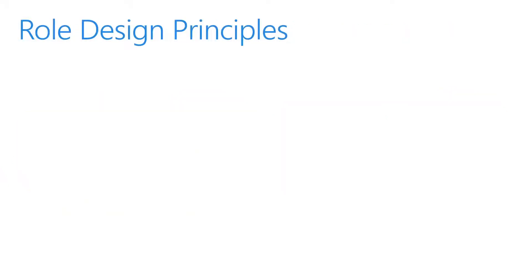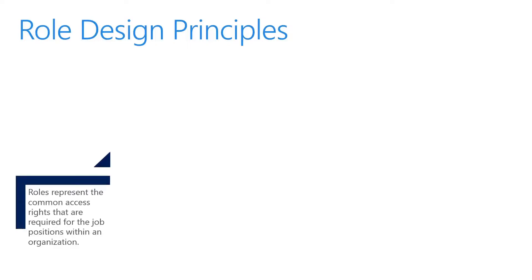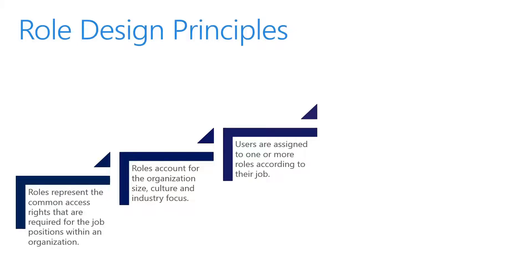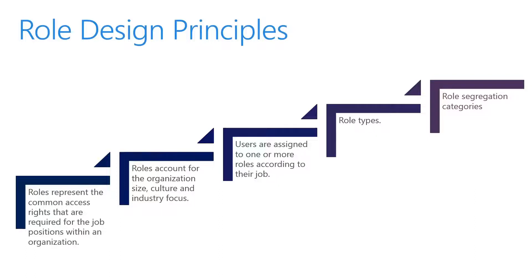Several common design principles were used when creating the base 80 or more roles. These include: roles that represent common access rights required for job positions within an organization; roles that account for organization size, culture, and industry focus; and users assigned to one or more roles according to their job. There are several different role types — for example, a warehouse worker, an organization role like an employee, or an application role like a system user. Role segregation categories are also included — functional roles are designed to accommodate segregation of duties, with categories such as validation, verification, authorization, or management.